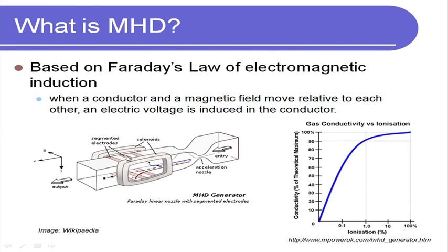So do we have a conductor that is moving? Yes — the ionized gas. Do we have a magnetic field? Yes. Are they perpendicular to each other? Yes. Is the conductor moving relative to the magnetic field? Yes. All conditions are satisfied. So if we apply electrodes in the third direction — at the ceiling and floor of the duct — and measure the voltage across them using segmented electrodes, we will measure a finite DC voltage, just like in thermoelectric generators.